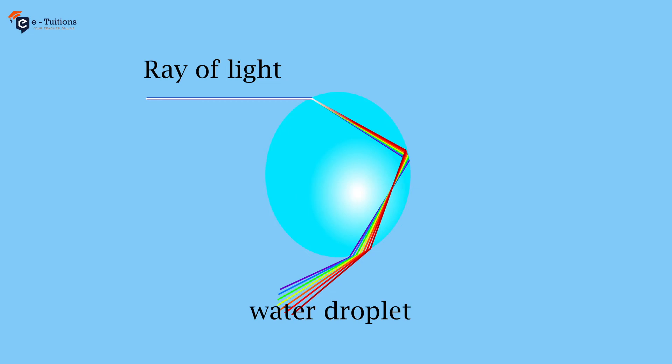This is how when sunlight passes through rain water droplets, it changes the sunlight into seven different colors. Awesome, isn't it?